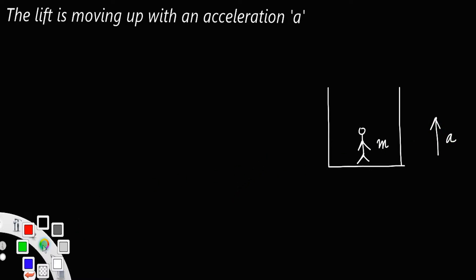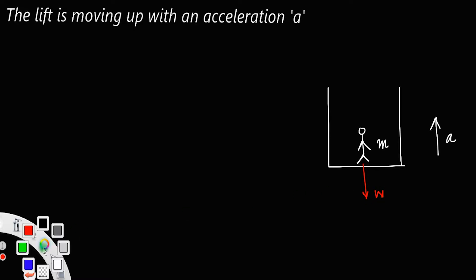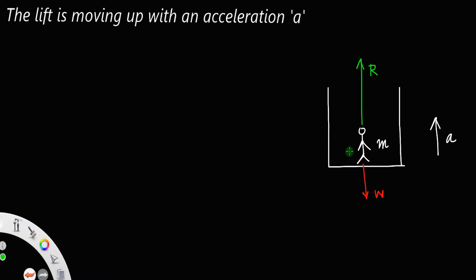The different forces acting on this person are: first, his weight w acting downward, and his reaction acting upward. These are the two different forces acting on the person in the lift.